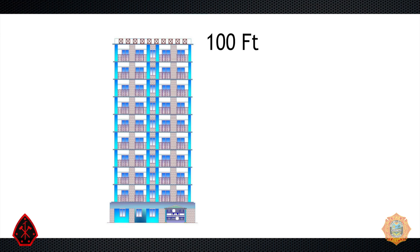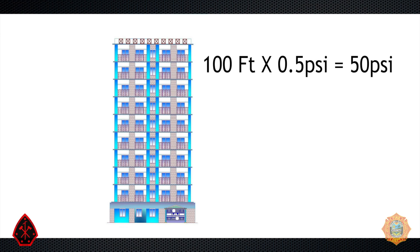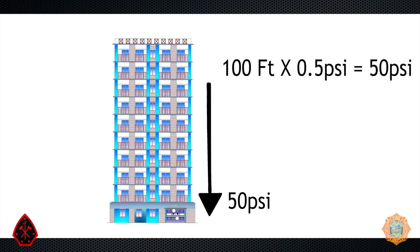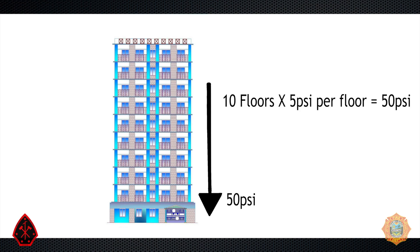Consider a 10-story building. If the building was exactly 100 feet high, that would be 100 feet of elevation times 0.5 psi, which equals 50 psi of head pressure at the base of the riser. Another way of calculating elevation loss is to take the number of floors — in this case 10 — times 5 psi per floor. The answer is the same: 50 psi of head pressure at the base of the riser.